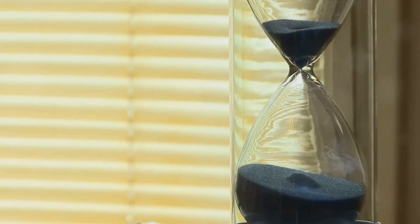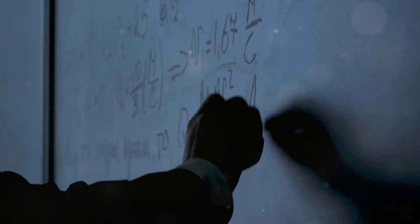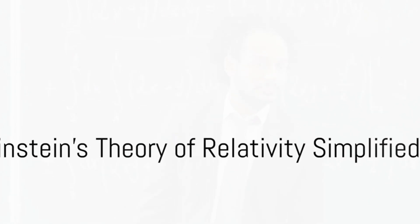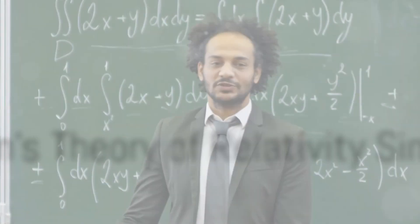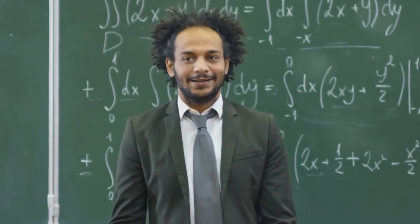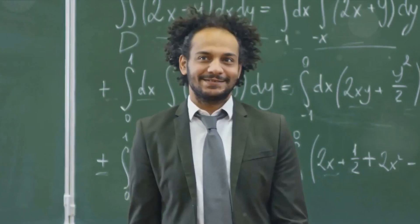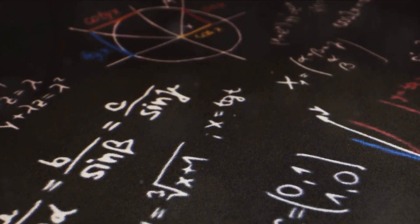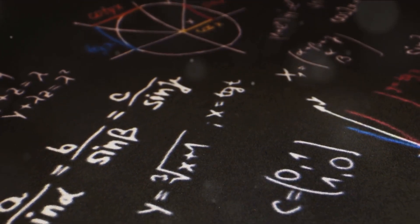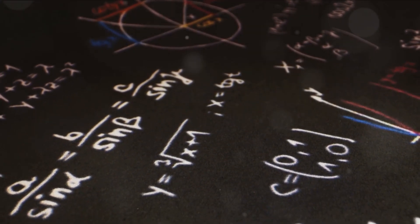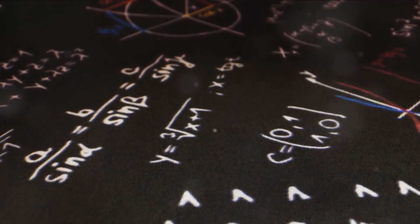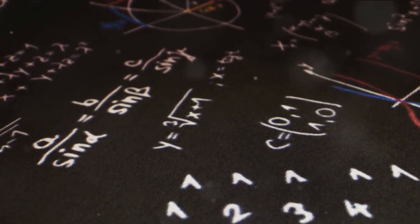So, what does all this talk about time and space mean? It leads us to the fascinating world of Einstein's theory of relativity. Now you might be wondering, what is this theory of relativity all about? Let's break it down and make it as simple as we can. Einstein's theory of relativity is essentially divided into two parts: special relativity and general relativity.